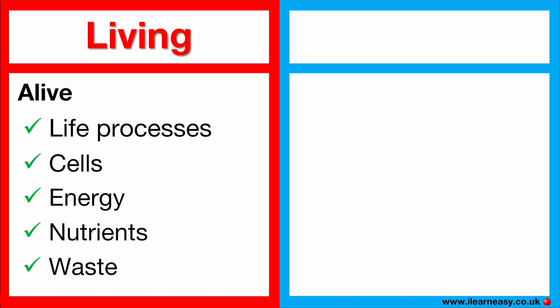All living things are made up of cells. All living things take in energy from their environment and use it to survive. All living things require nutrients in order to survive — they get these from food and water. All living things excrete waste after taking in nutrients.